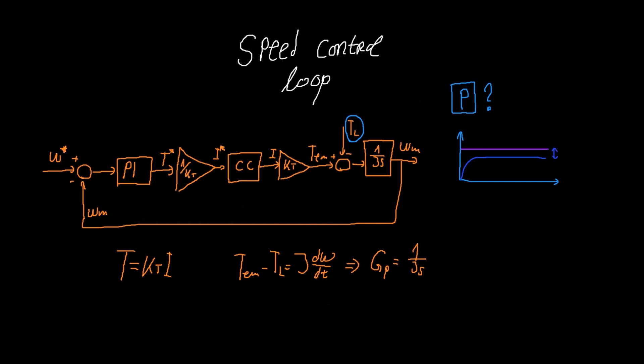So the error will be proportional to the load torque and the proportional gain. Therefore we are going to add integral action and we are going to form a PI controller and ensure that we have zero steady state error.